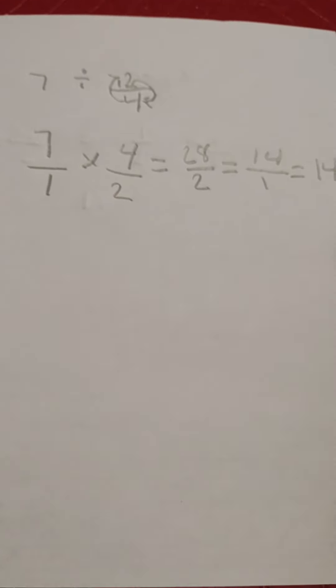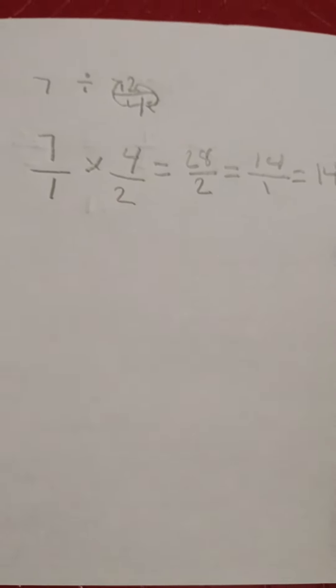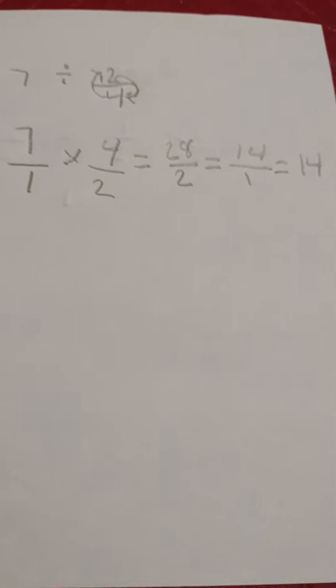So, the answer to seven divided by two fourths is 14. We'll talk about it. Thank you.